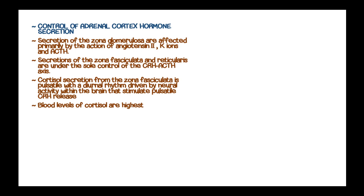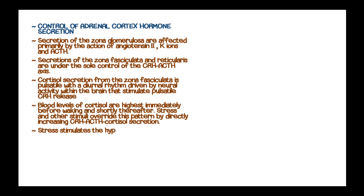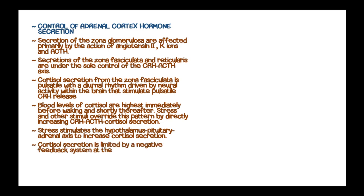Blood levels of cortisol are highest immediately before waking and shortly thereafter. Stress and other stimuli override this pattern by directly increasing CRH-ACTH-cortisol secretion. Stress stimulates the hypothalamic-pituitary-adrenal axis to increase cortisol secretion; therefore, cortisol is referred to as a stress hormone. Cortisol secretion is limited by a negative feedback mechanism at the level of both the hypothalamus and the anterior pituitary gland.